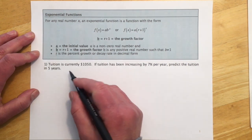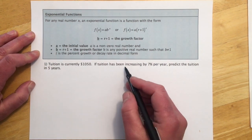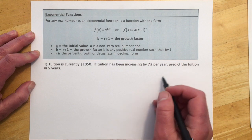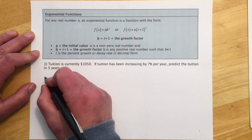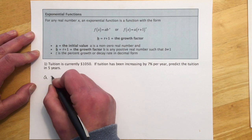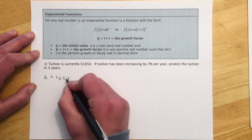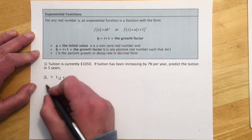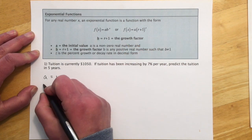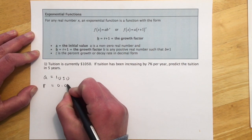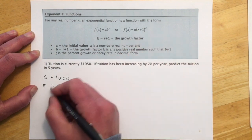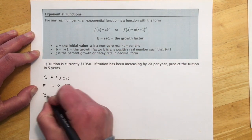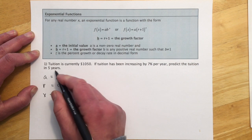Okay, so for number one, tuition is currently $10,050. If tuition has been increasing 7% per year, predict the tuition in five years. So our initial amount is going to be a is $10,050. Our rate, since it gives us a percentage, we're going this way. So rate is 0.07. And then we know the input time, or in this case x, is five years.